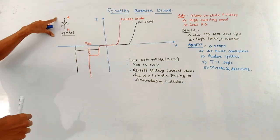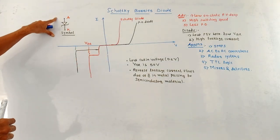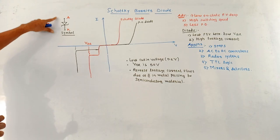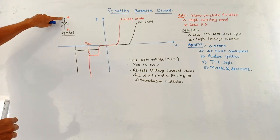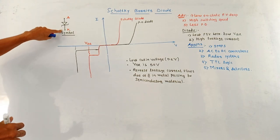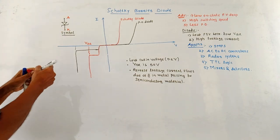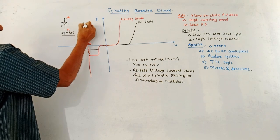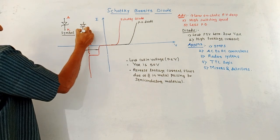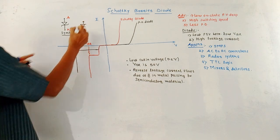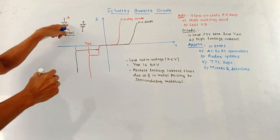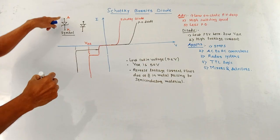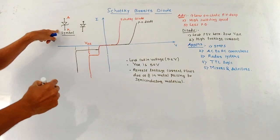This represents the symbol of the Schottky Barrier Diode — this is the anode terminal, and this is the cathode terminal. In the case of a normal diode, the symbol is different. In the case of the Schottky Barrier Diode, the symbol is as shown in this diagram.